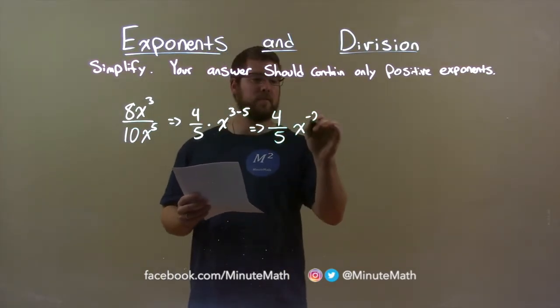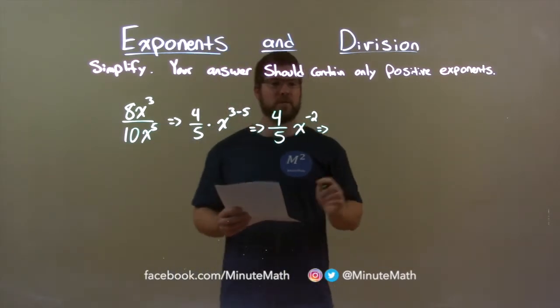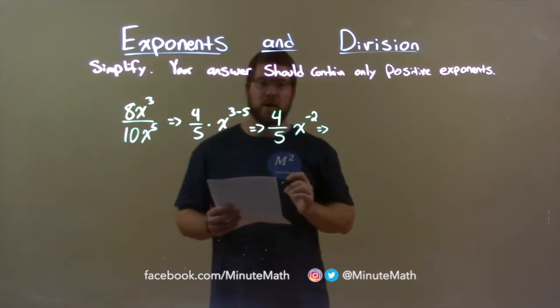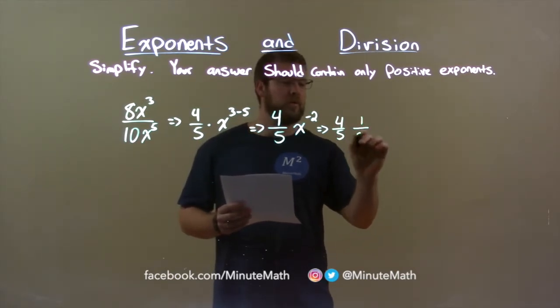3 minus 5 is a negative 2. They told us we cannot have negative exponents, so x to the negative 2 power is the same thing as 1 over x squared.